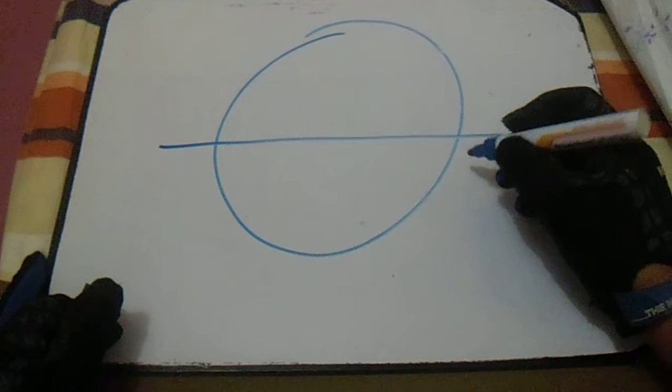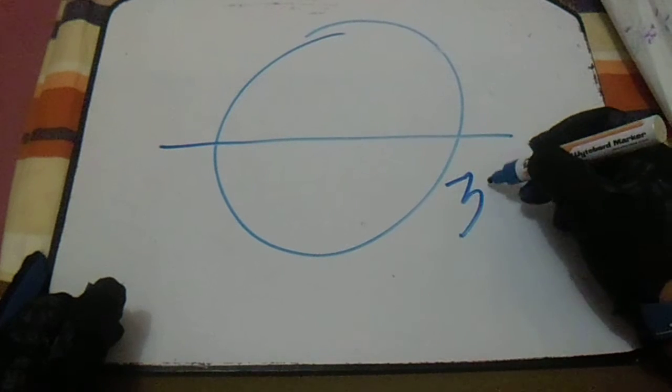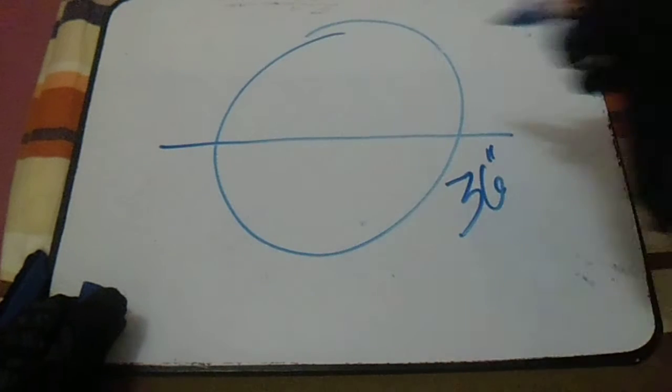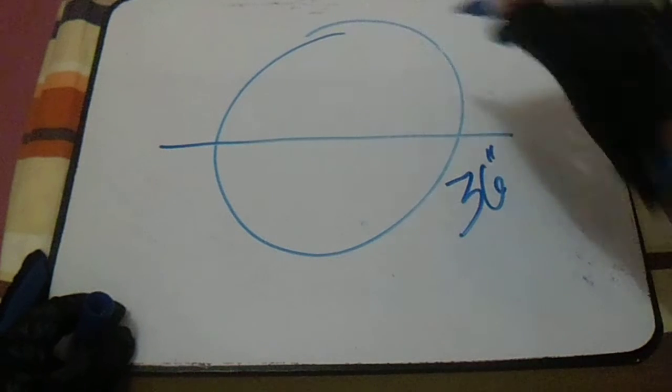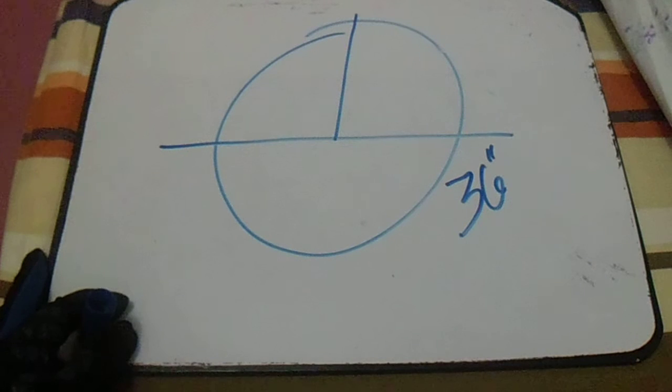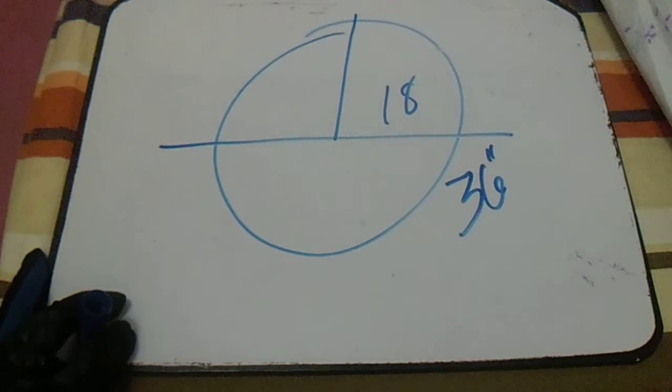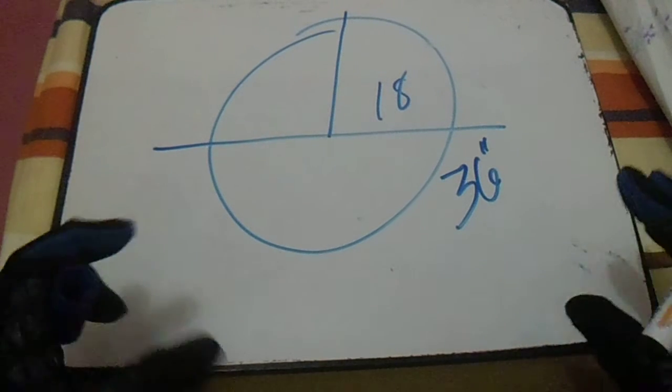Our diameter of pipe is 36 inches, and we also have a given radius. So what is our radius? Our radius is 18.